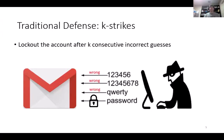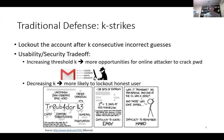The traditional defense against online attacks is to lock the user's account after K consecutive incorrect guesses. In this example, the attacker is locked out after submitting three incorrect guesses. The traditional K-strikes mechanism induces a classical usability-security tradeoff. Some have advocated for larger values of K — for example, K equals 10 — to improve usability, but this also gives the online attacker more opportunities to crack the user's password. Others would advocate for smaller K, for example K equals 3, to improve security.